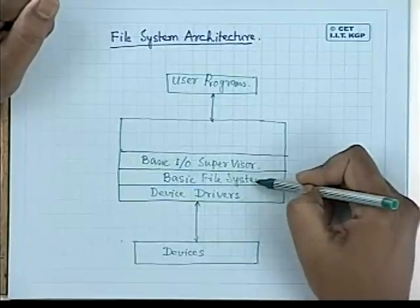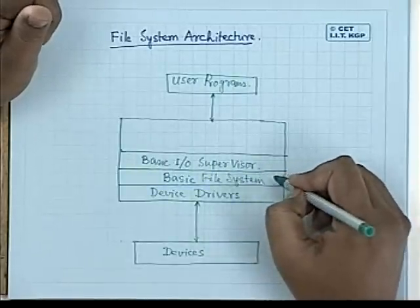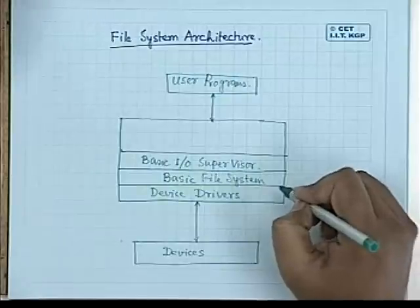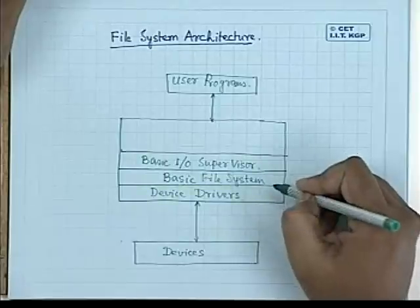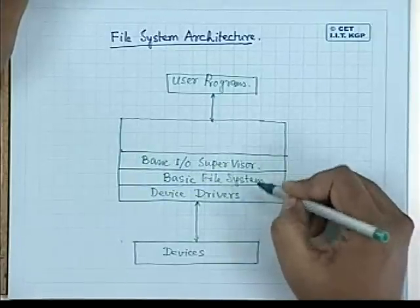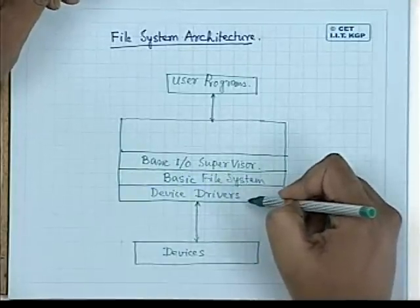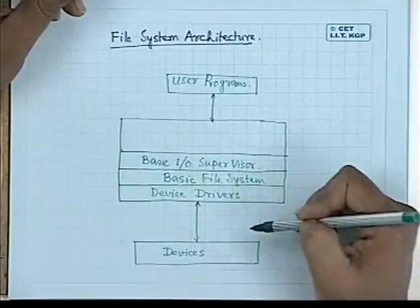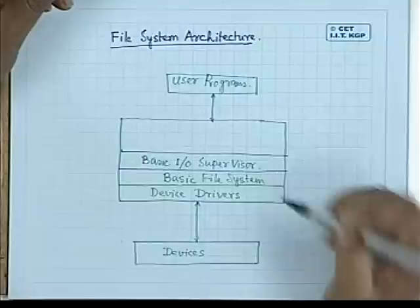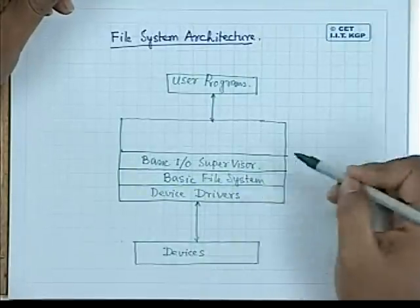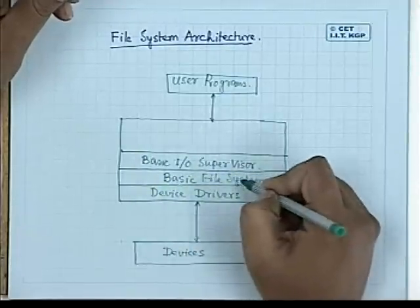Just above the device driver we have another layer called the basic file system. The main responsibility of the basic file system is to initiate an operation and process its completion. Whenever a process requests reading a particular block of a file, the basic file system instructs the device driver to read that block. When the block is read, the device driver generates an interrupt to terminate the IO operation.